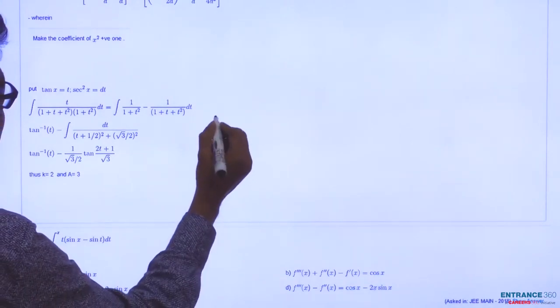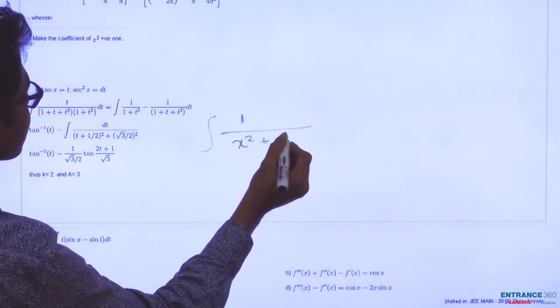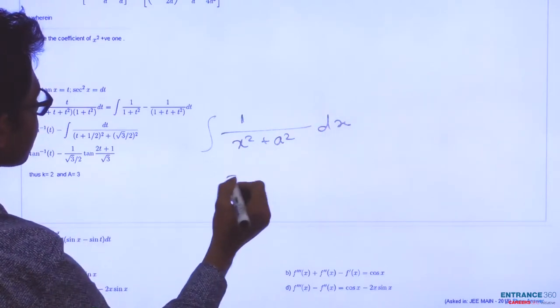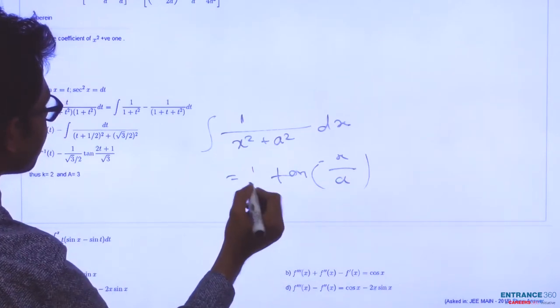And similarly, this function, the integration of dx over x squared plus a squared is equal to tan inverse of x over a times 1 by a.